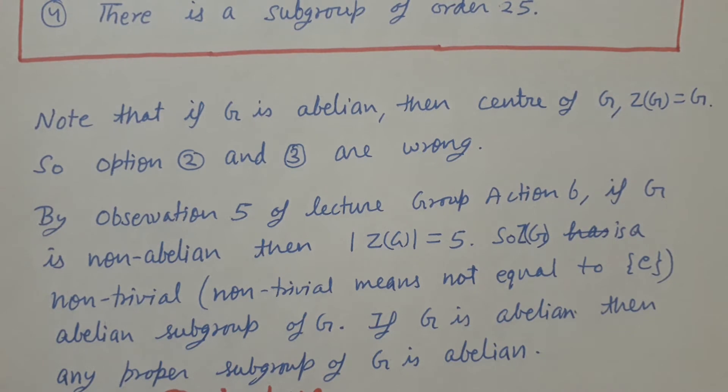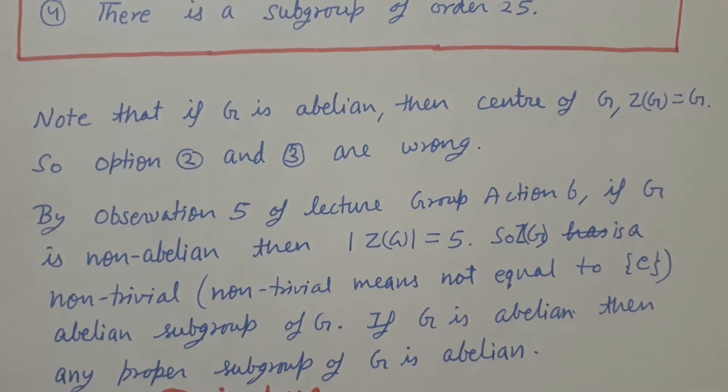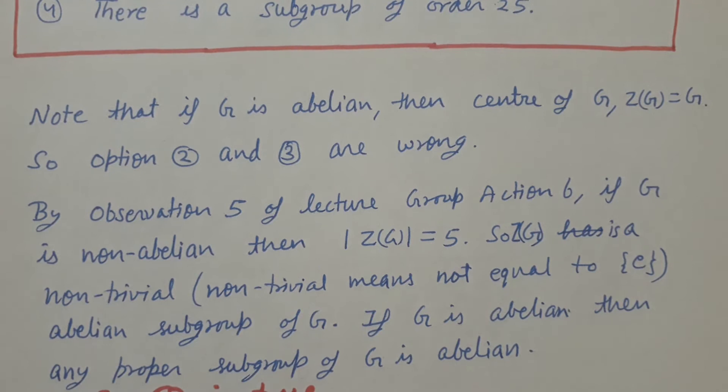By observation 5 of lecture Group Action 6, if G is non-abelian, then the order of the center of G is 5. So the center of G is a non-trivial abelian subgroup of G. Non-trivial means a subgroup that contains more than identity elements. Trivial subgroup means just the identity subgroup, so non-trivial means more than identity.